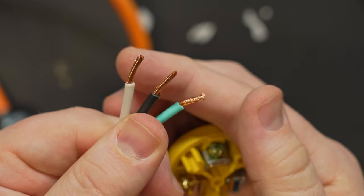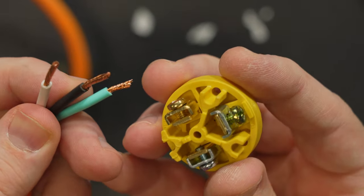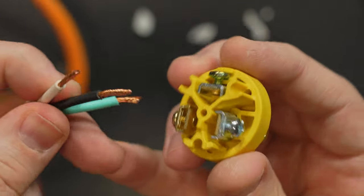And again black is hot, white is neutral, green is ground. So decide which wire you're going to start with. I think I'll start with my hot, that's the black one.